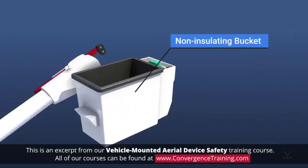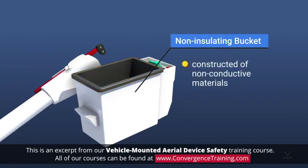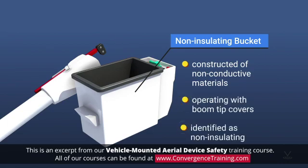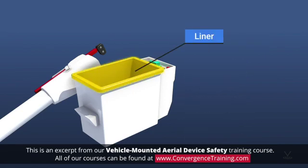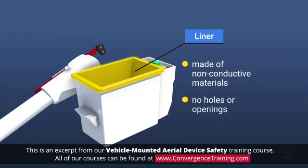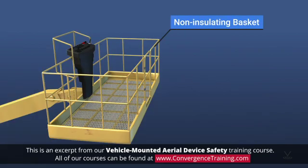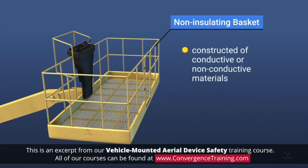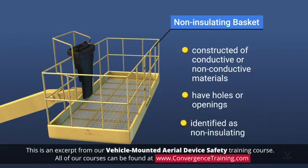Non-insulating buckets and baskets intended for use with insulating liners must be constructed of non-conductive materials or capable of operating with boom tip covers, and be identified as non-insulating. The liners must be made of non-conductive materials, not have any holes or openings, and be tested for dielectric integrity. Non-insulating buckets and baskets for use without liners may be constructed of conductive or non-conductive materials and have holes or openings, but must be identified as non-insulating.